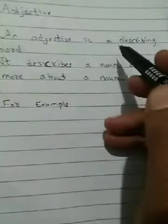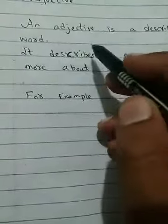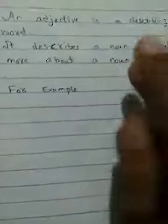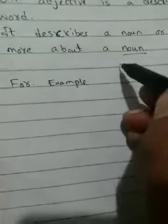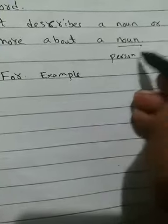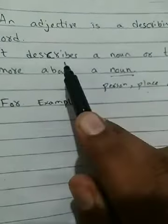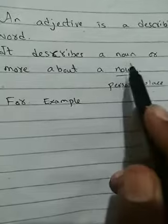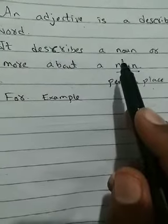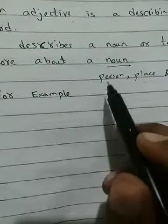An adjective is a describing word — it describes a noun. Now we should know what a noun is. A noun is the name of a person, place, and thing. An adjective describes a noun — that is, it gives more information about a person, place, or thing. That is an adjective.